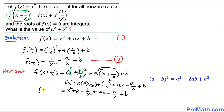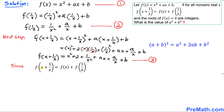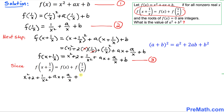This is equation number 3. Now we apply the given condition: f(x + 1/x) = f(x) + f(1/x). On the left-hand side, f(x + 1/x) is equation number 3, so we write: x² + 2 + 1/x² + ax + a/x + b.